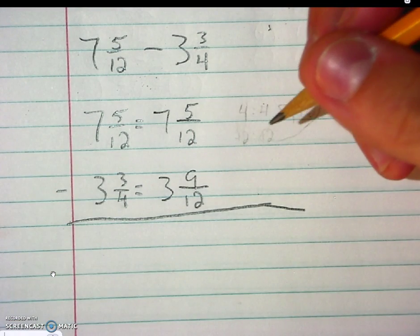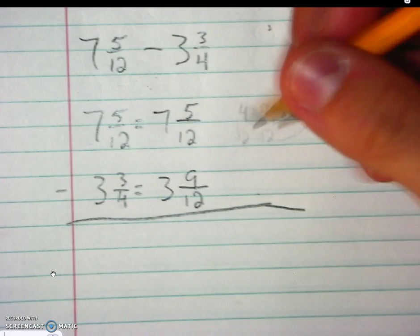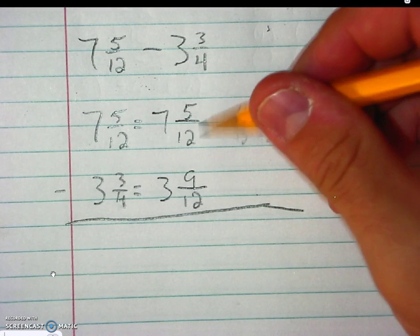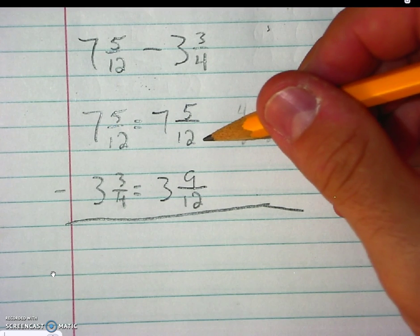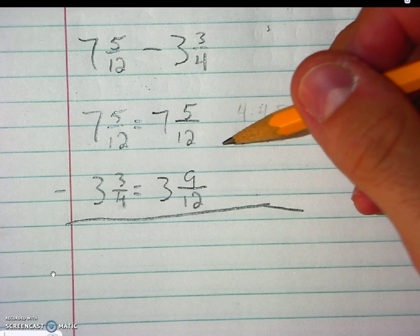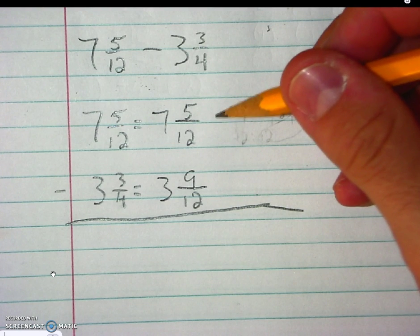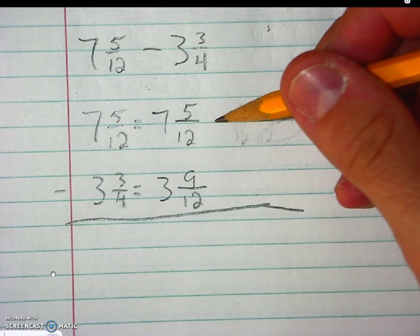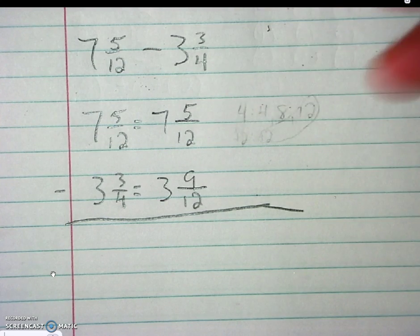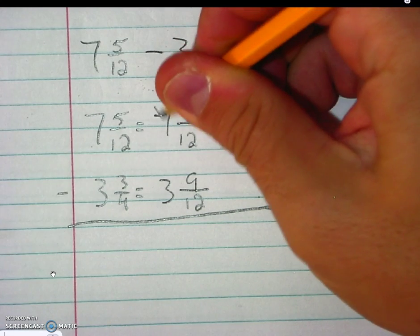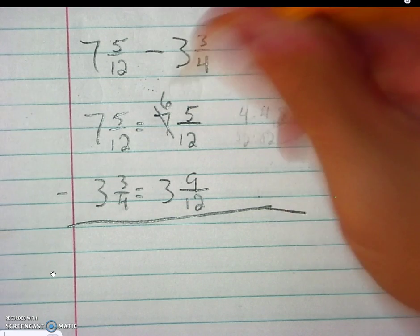Now, this is a little bit of a wrinkle in the process. We've got 5 twelfths on the top, and we're needing to subtract 9 twelfths. If you only have 5 twelfths here to subtract, what you're going to have to do is borrow from the whole number. So I am going to mark out that 7 and make it a 6.